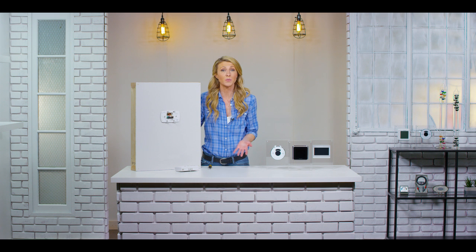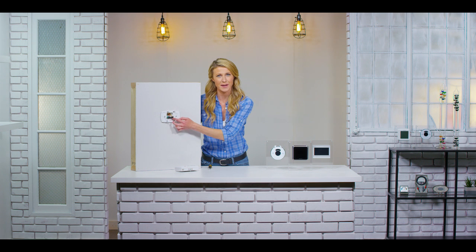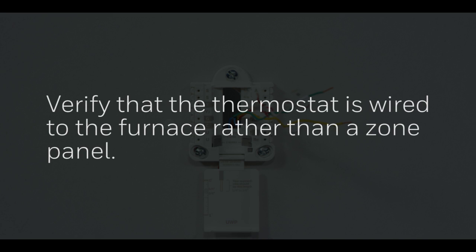If you don't have an extra unused wire, you can also substitute your G wire for your C wire. Verify that the thermostat is wired to the furnace rather than a zone panel.